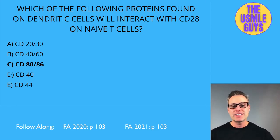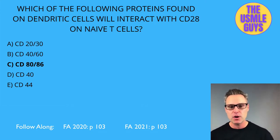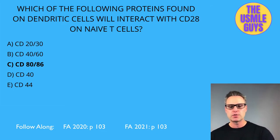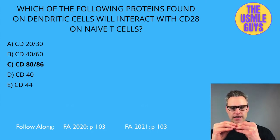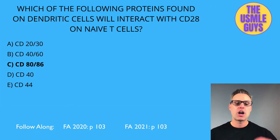In step three, the second signal between the dendritic cell and T-cell occurs when the B7 protein — also known as CD80/86 — on the dendritic cell interacts with CD28 on the naive T-cell. B7 plus CD28 leads to T-cell activation. An activated helper T-cell then produces cytokines, while an activated cytotoxic T-cell can recognize and kill a virus-infected cell.